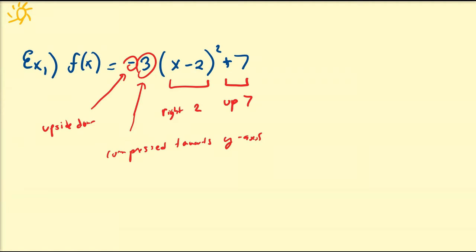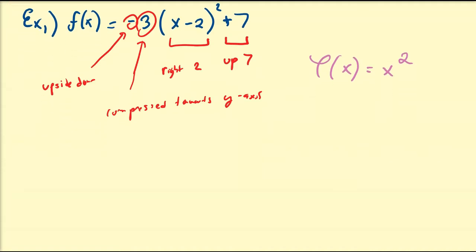What is the primary function being transformed here? That's going to be the function f(x) = x². So let's start with that function and transform it step by step. Let's call the first transformation f1(x) = x².